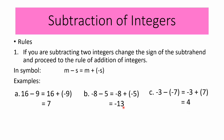For example letter C, we have negative 3 minus negative 7. Copy the minuend, which is negative 3, change the minus sign to a plus sign, and get the opposite sign of negative 7, which is positive 7. So negative 3 plus 7, following the rule of addition of integers, equals 4. Therefore, negative 3 minus negative 7 is equal to positive 4.